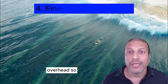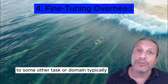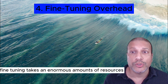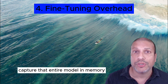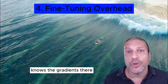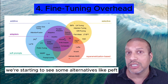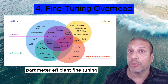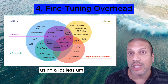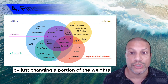Fine-tuning overhead is the next challenge. Fine-tuning is when we adapt a pre-trained model to some other task or domain. Typically, fine-tuning takes enormous amounts of resources because we need to capture the entire model in memory, change and update its weights, and track the gradients. One alternative we're seeing is PEFT — parameter-efficient fine-tuning — which allows us to fine-tune using a lot less compute power by changing only a portion of the weights.